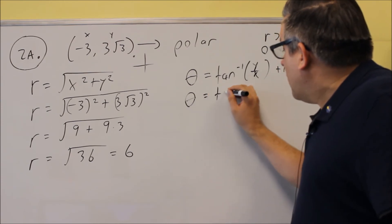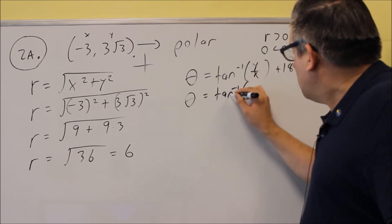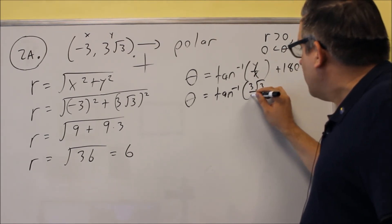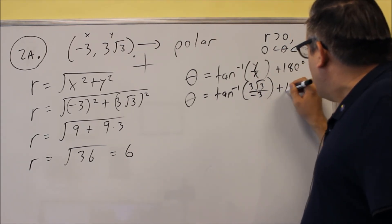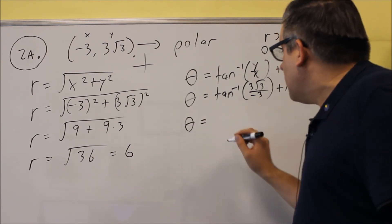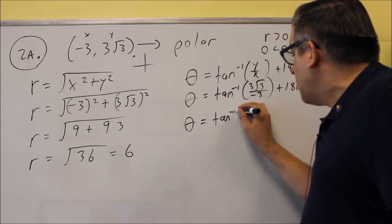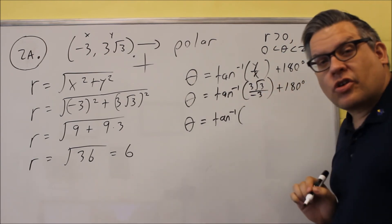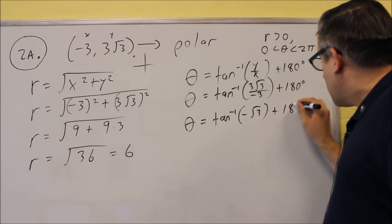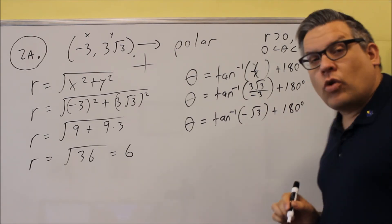For this, we're going to do inverse tangent of the Y value, three square root of three over negative three, and then we're adding 180. So theta is going to be inverse tan... The threes are going to cancel out, and we get negative square root of three, and then we add plus 180.